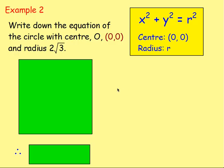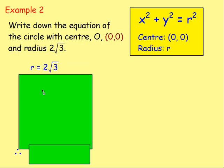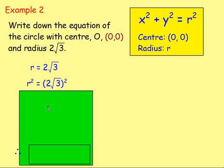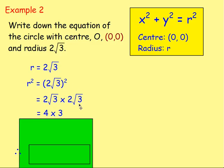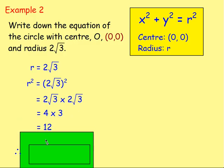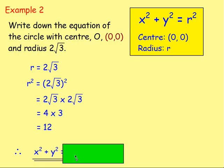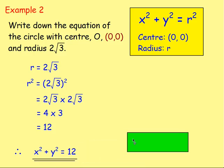Example number 2: write down the equation of the circle with centre O, which is the origin (0,0), and radius 2 root 3. You know it's going to be of the form x-squared plus y-squared equals r-squared. We need to find r-squared, so we square 2 root 3. Squaring 2 root 3 means 2 root 3 times 2 root 3. Multiply the whole numbers: 2 times 2 gives 4. Then root 3 times root 3 gives root 9, and the square root of 9 is 3. So 4 times 3 gives 12, meaning r-squared equals 12. The equation of the circle is x-squared plus y-squared equals 12.